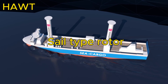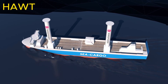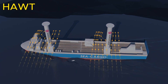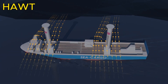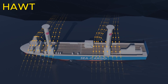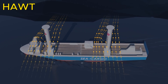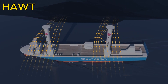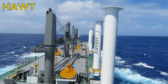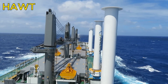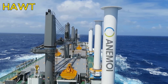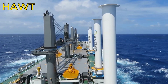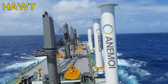The sail type rotor has few blades, usually two or three, that are rigid and aerodynamic. It is suitable for medium to high wind speeds and medium to high torque applications, such as electricity generation. It has a high TSR and a low solidity.